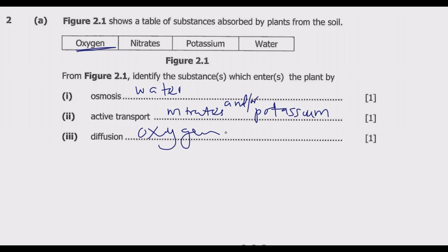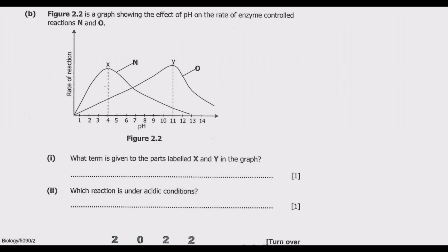Let us move to the next question. Figure 2.2 is a graph showing the effect of potential hydrogen, or pH, on the rate of enzyme-controlled reactions N and M. What term is given to the parts labeled X and Y in the graph? X and Y are all peak values — the highest rate of reaction — so at the peak this is what is known as the optimum pH.